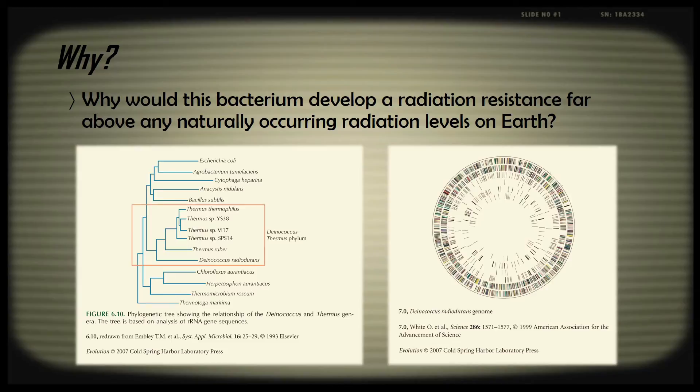So why would this bacterium develop a radiation resistance far above any naturally occurring radiation levels on Earth? Well, it's suspected that this trait evolved due to its ability to survive lengthy periods of dehydration. Dehydration and radiation have very similar effects on cell damage in that they both cause double-strand breaks in chromosomal DNA, and D. radiodurans evolved to repair 1,000 to 2,000 DNA fragments per cell within 24 hours. This happened successfully due to redundancy in the DNA code.